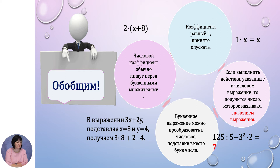То есть если сделали действие, получили результат — вот этот результат и будет называться значением выражения. Например, 125 делённое на 5 и минус 3 в квадрате умноженное на 2. Если выполнить эти действия и посчитать, получится число 7. Значит, число 7 является значением этого числового выражения.